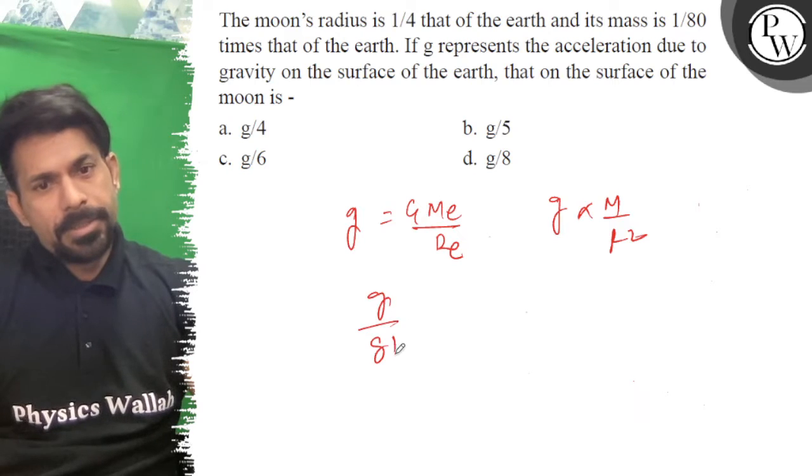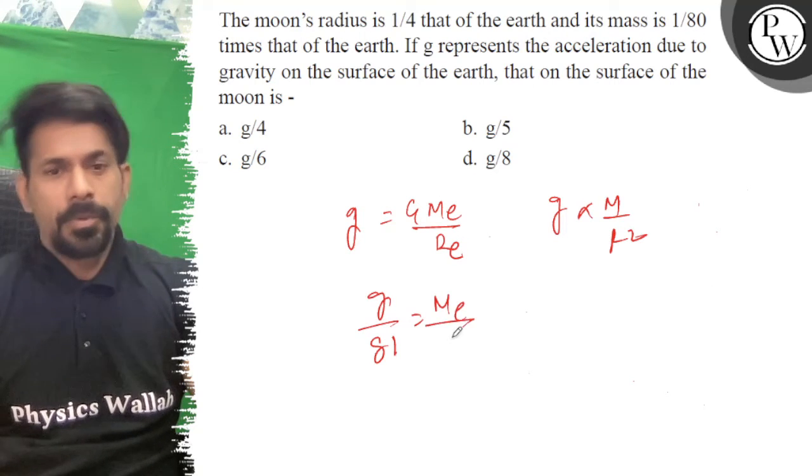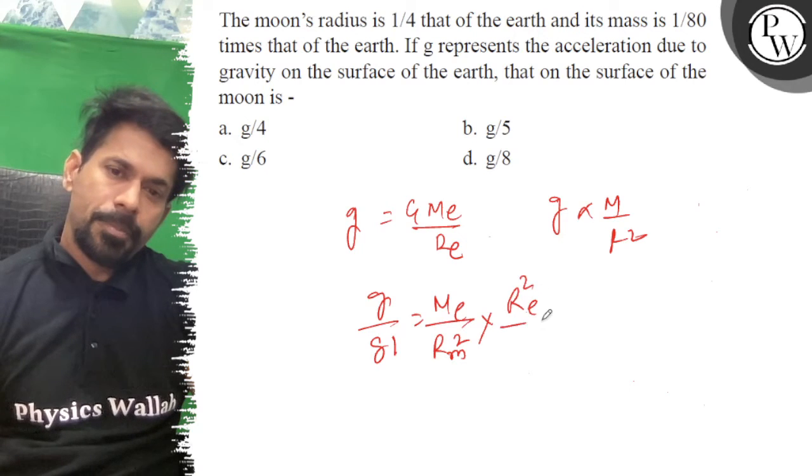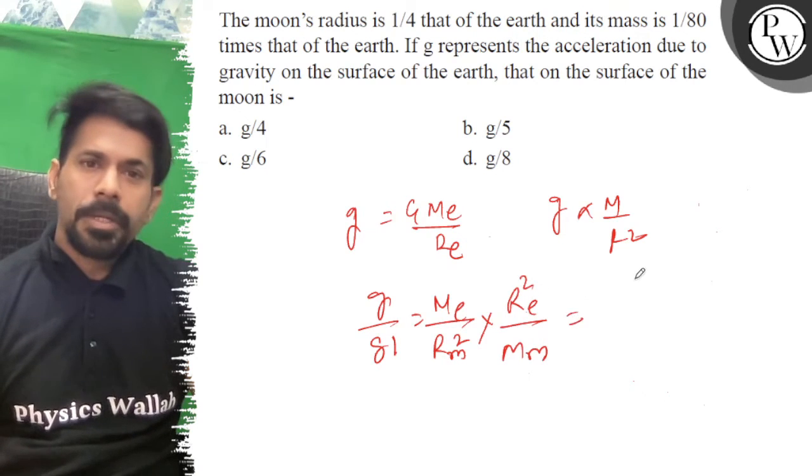g upon g dash is equal to mass of earth upon radius of moon squared into radius of earth squared upon mass of moon. Moon's radius is 1/4th of the earth's radius.